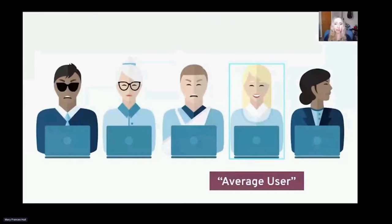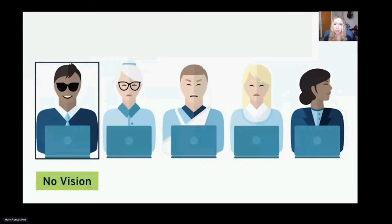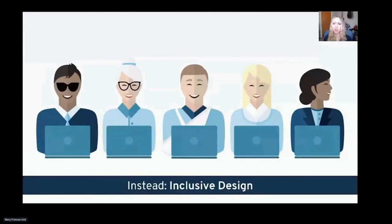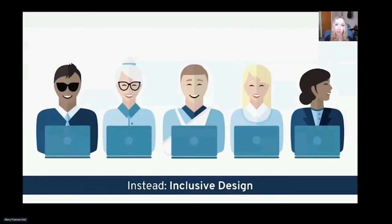Often we might prioritize — knowingly or unknowingly — users who are a lot like us. This is normal but not ideal. Conversely, with accessibility we might prioritize users on one end of the spectrum. Even though this might be done with good intentions, this isn't ideal either. Instead, no single user group should be given priority over other groups. Most users with disabilities don't want prioritization anyway — they just want equal access, the same access. This is inclusive design.